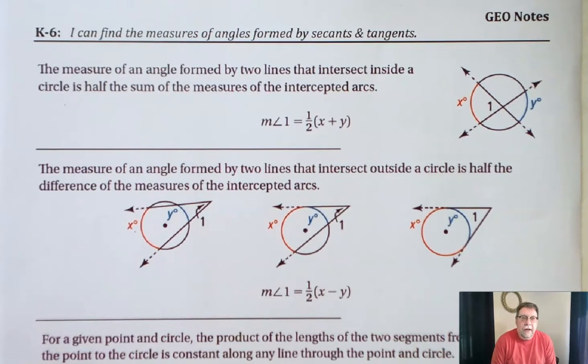We have several theorems in K-6, our last section for unit K, our circle unit. We're going to find the angle measures, the measures of angles formed by secant lines and tangent lines.